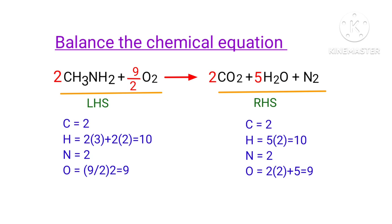In this equation, nine by two is a rational number. We don't use rational numbers for chemical equations. So to get whole numbers, we need to multiply this equation by a coefficient of two.